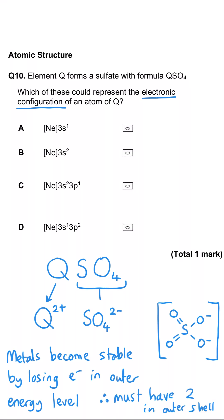Now, the only one with two in the outer shell is B. The others have got one or three in their outer shell.